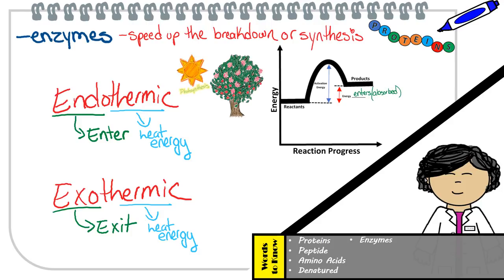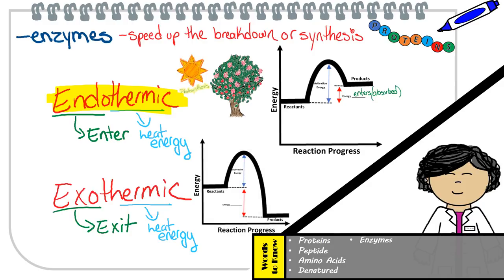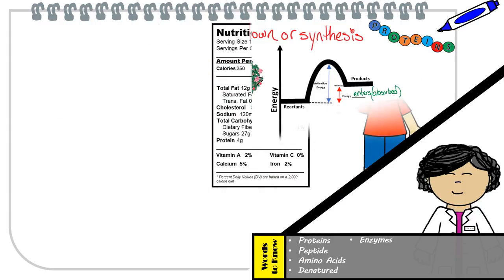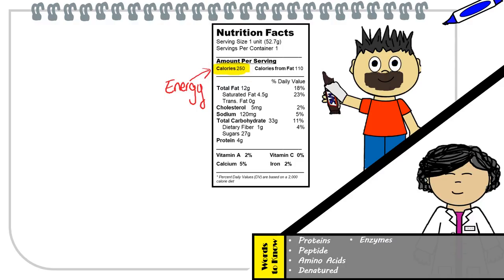Therefore, we say that carbohydrates store energy through this reaction. This endothermic reaction is also known as photosynthesis. Now take a look at this next graph — notice that the energy of these products is lower than the reactants, because additional energy is released. Additional energy is being released when the grasshopper breaks down the carbohydrates found in plants; when broken down, that energy stored in them is going to be released for the cells to use. Calories labeled on the nutrition fact label refers to the amount of heat energy that can be released from the biomolecules it consists of.